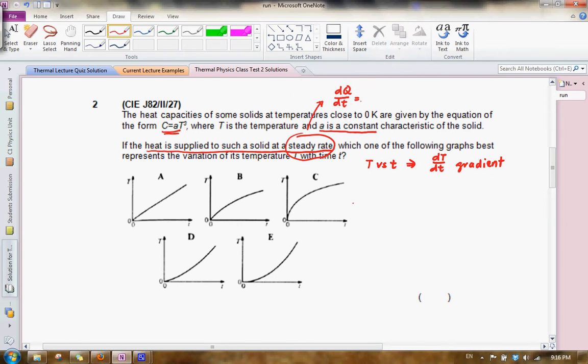This means that dQ dt itself is actually a constant. So from the question, simply what we therefore need perhaps to do is to look for some relationship between Q, the heat capacity, the temperature T and the time itself. So we know that the heat supplied is actually used for increasing the temperature.